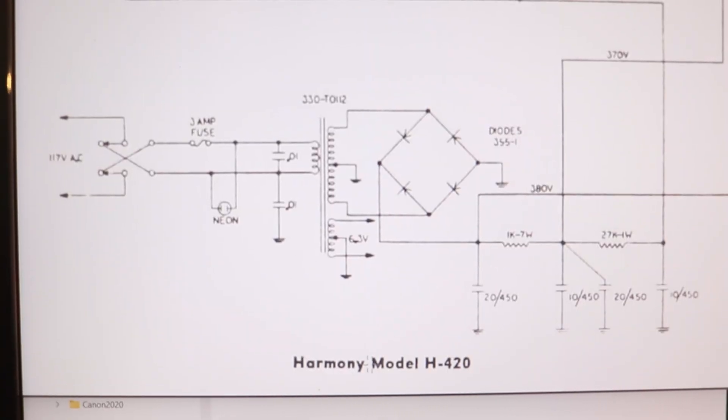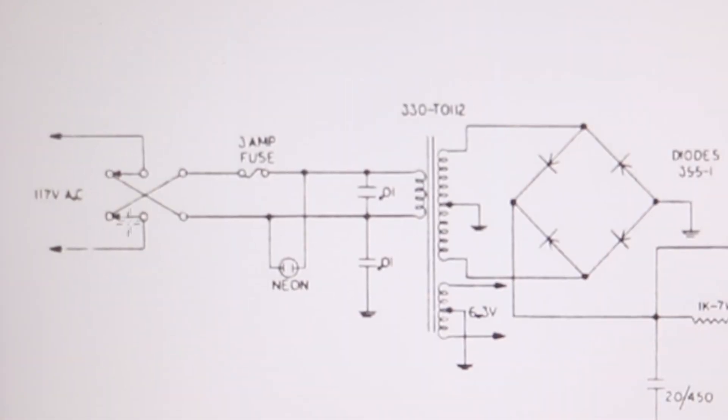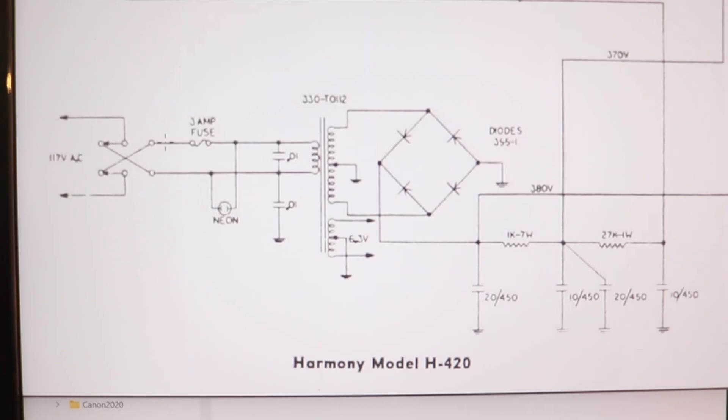So what I'd like to address right now, this is a schematic of the input of the Harmony Model 420. You have the power coming in, and this is a reversible switch right here. This will either go straight or it will reverse the connection, which can be a problem. Let's just consider this bottom side, and we'll look at the death cap. If you follow this along, this one's connected to the neon light, which goes between the two poles.